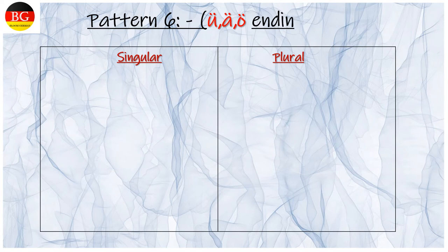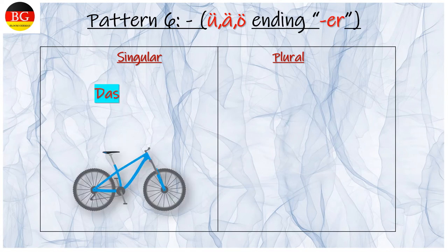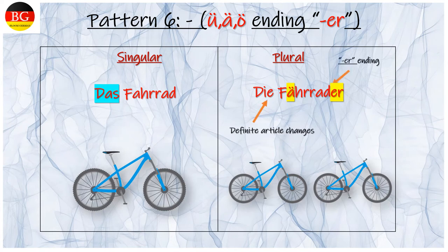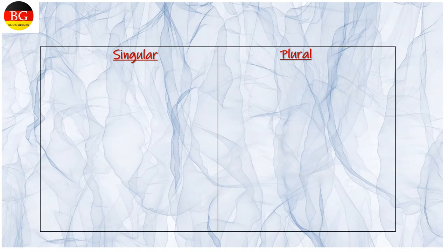Pattern 6: Stem vowel getting changed, ending ER is getting added. Zum Beispiel: das Fahrrad, die Fahrräder. Ending ER is added. Definite article changes and stem vowel getting changed.